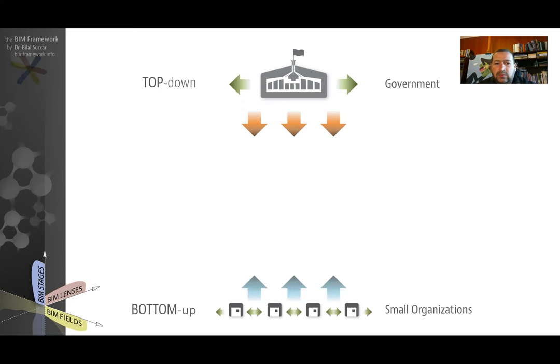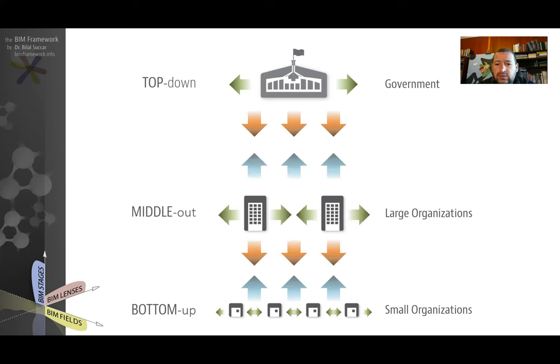One missing dynamic often not mentioned or identified is the one which happens more often actually—the diffusion led by large organizations, associations, and departments, which we refer to as middle-out diffusion dynamics.